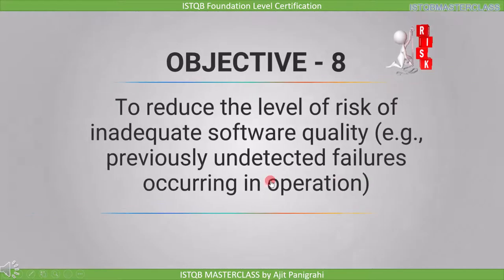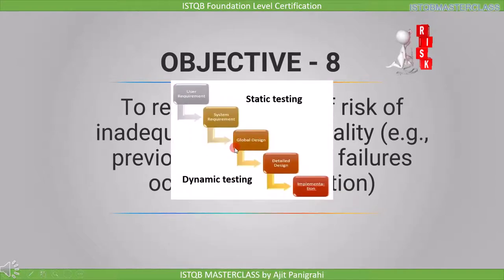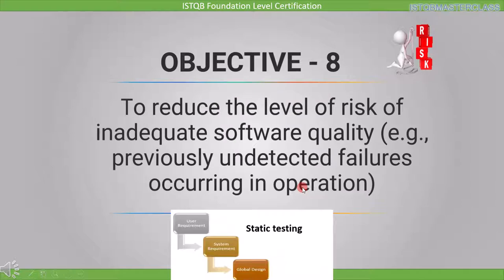The eighth objective is to reduce the level of risk of inadequate software quality — for example, previously undetected failures occurring in operation. This objective is related to the fifth and sixth objectives. We need to find the defect in the same stage in which it is introduced; otherwise, it will be found in operation, and we already know what the impact of faulty software can be.